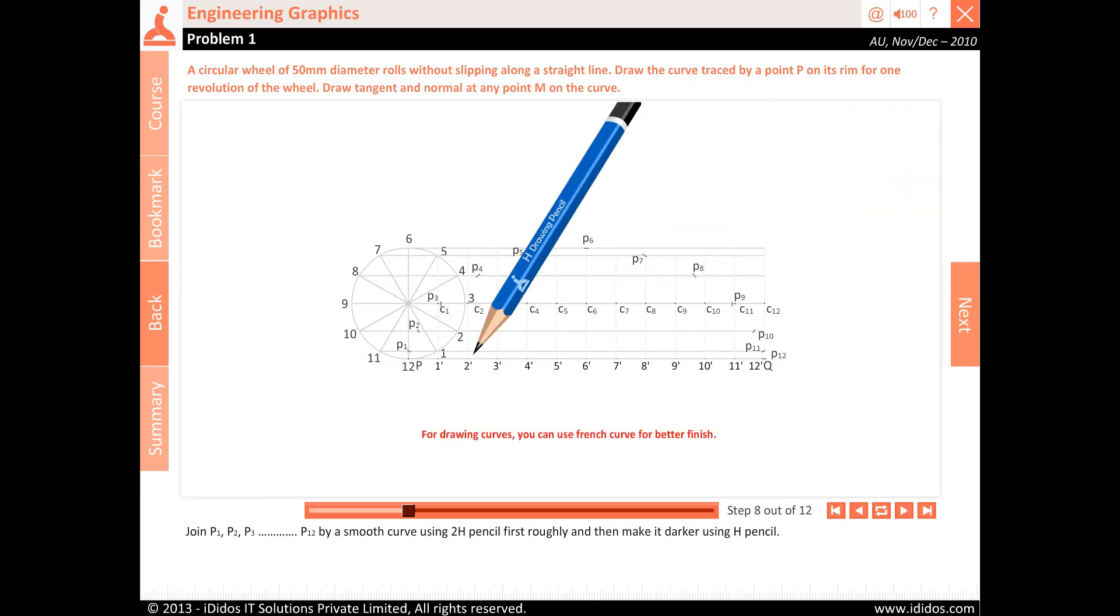Join P1, P2, P3, P4, P5, P6, P7, P8, P9, P10, P11, and P12 by a smooth curve using 2H pencil first, roughly, and then make it darker using H pencil.